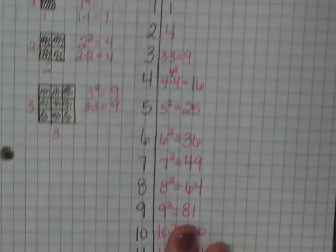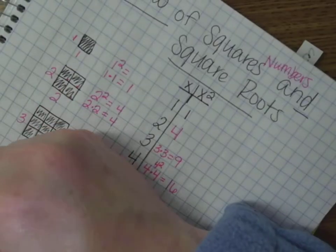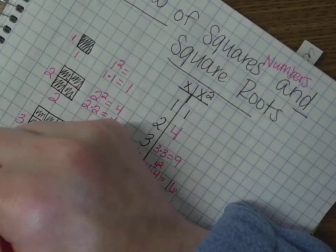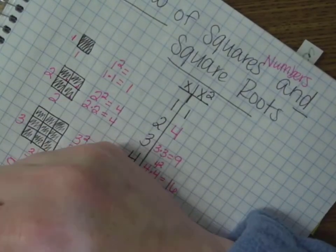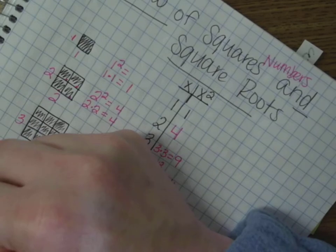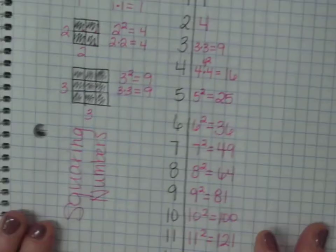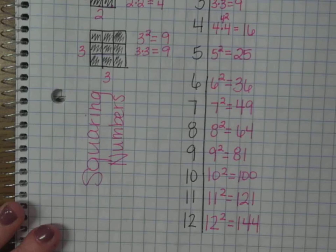So, this is squaring numbers. Now, let's go the opposite direction. Let's do square roots.